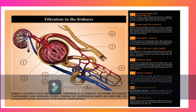Reabsorption is the movement of water and solutes from the tubule back into the plasma. Reabsorption of water and specific solutes occurs to varying degrees over the entire length of the renal tubule. Bulk reabsorption, which is not under hormonal control, occurs largely in the proximal tubule, where over 70% of the filtrate is reabsorbed. Many important solutes like glucose, amino acids, and bicarbonate are actively transported out of the proximal tubule. Further, bulk reabsorption of sodium occurs in the loop of Henle. Regulated absorption, in which hormones control the rate of transport of sodium and water depending on systemic conditions, takes place in the distal tubule and collecting duct.